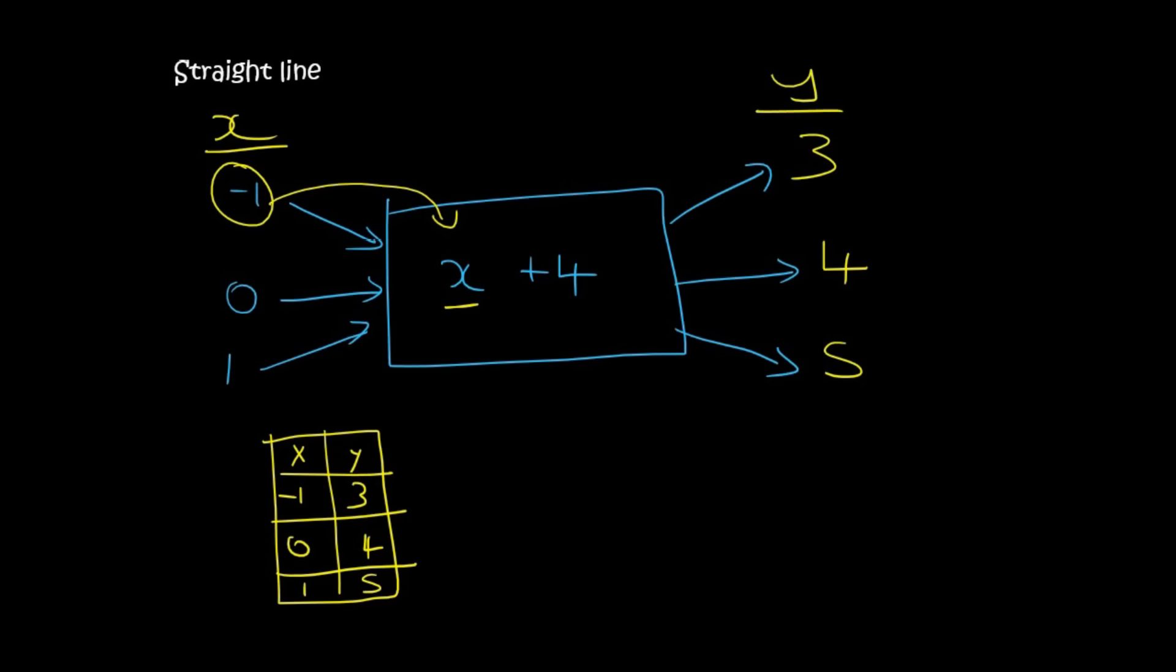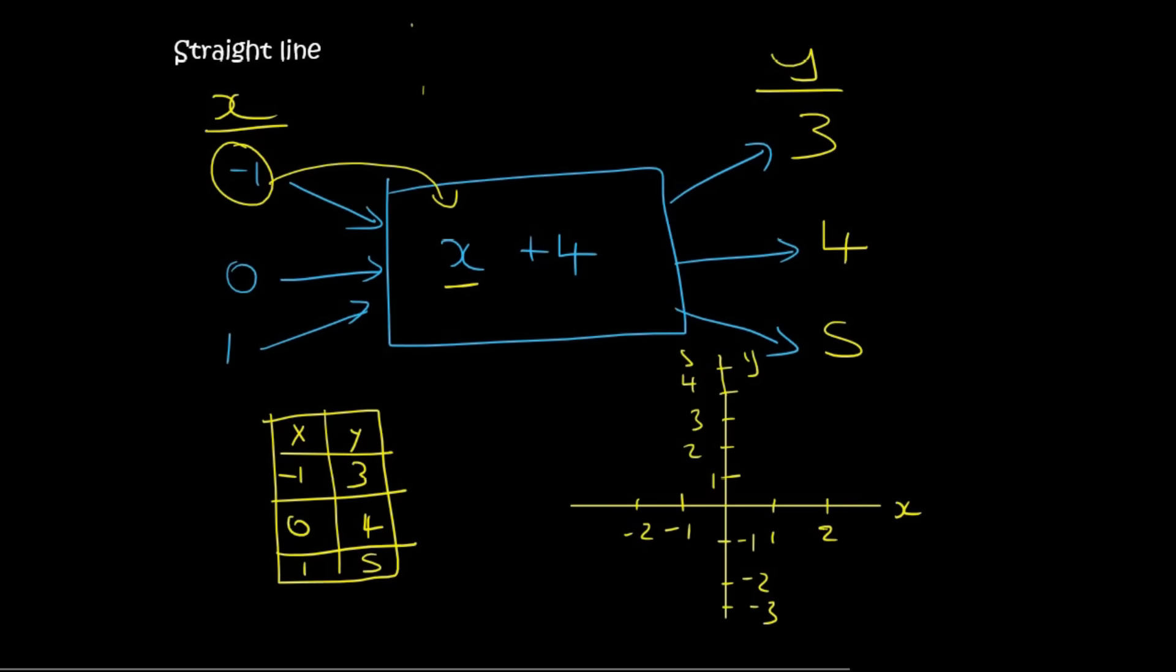If I quickly draw an x-y diagram where we said that this was x and this was y, then we could plot those points. So when x is minus 1, which is here, then y is 3. So that's going to be a dot over there. When x is 0, which is here, then y is 4. So we should go up by 4. So that's a dot over there.